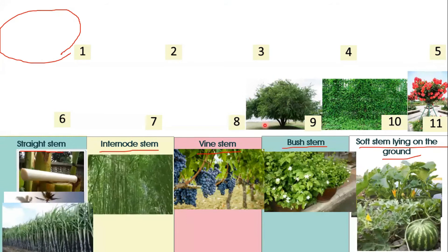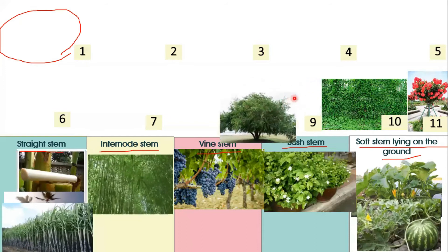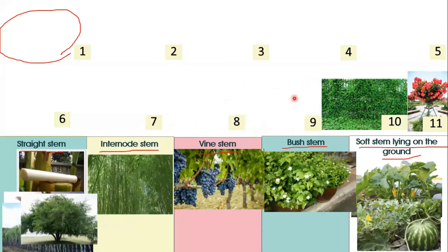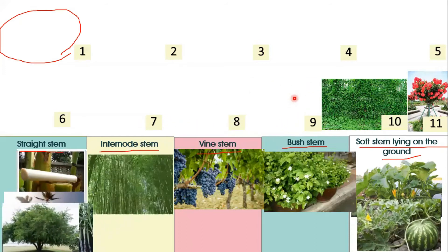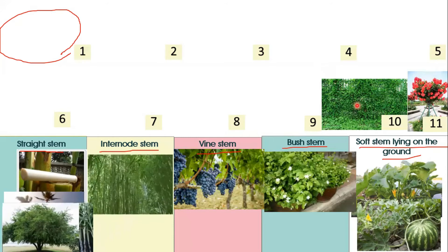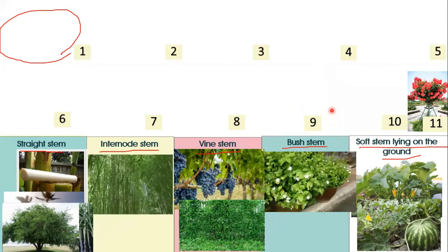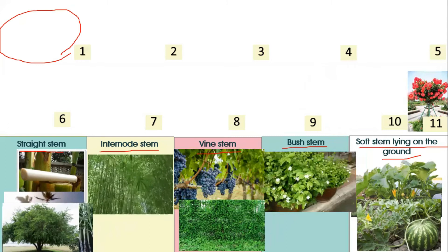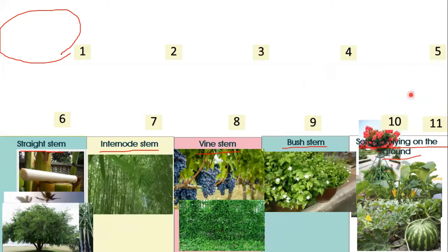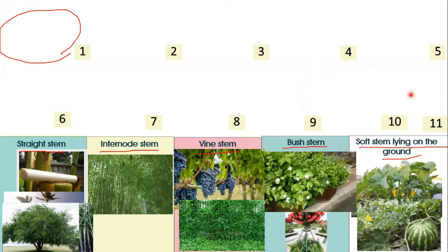Number nine is tamarind — tamarind has the straight stem. Number ten is ivy gold — ivy gold has the vine stem. And the last one is the rose — the rose has the butch stem. Good job!